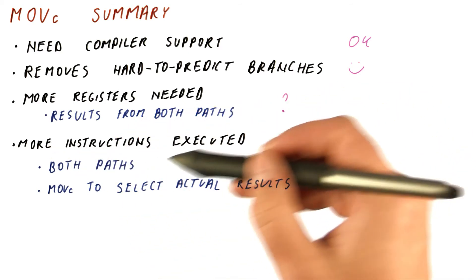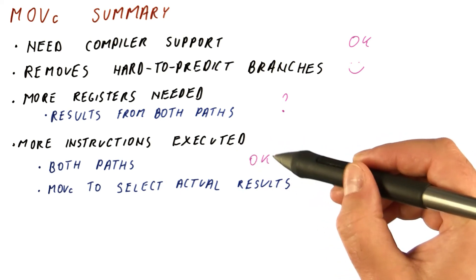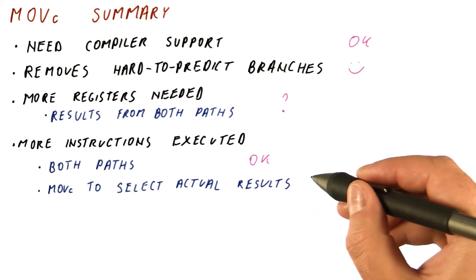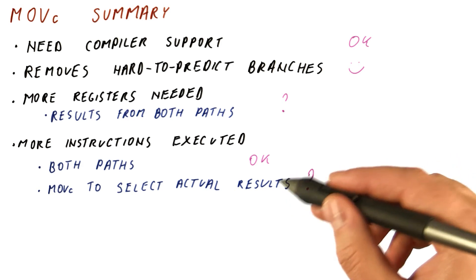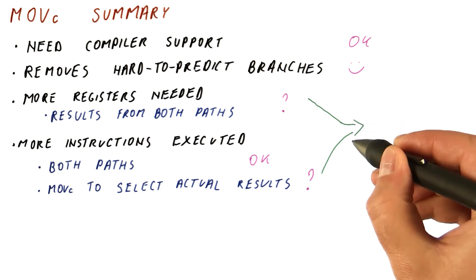More instructions are executed because we execute both paths. This again is okay, that's how we do if conversion. But do we really have to have additional instructions just to select the results? To get rid of this and this problem, we can change our ISA so that every instruction is now conditional.